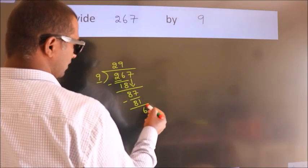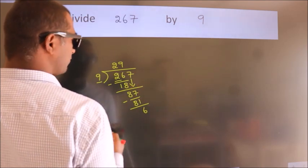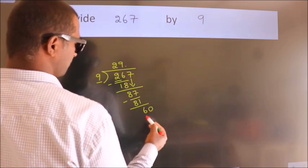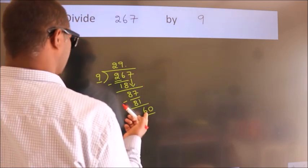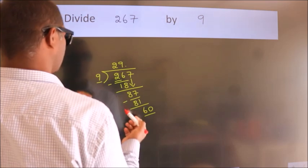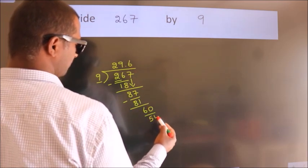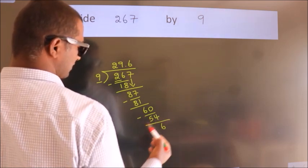After this, no more numbers to bring down. So what we do is put a dot and take 0, making 60. A number close to 60 in the 9 times table is 6 nines, 54. Now we subtract and get 6.